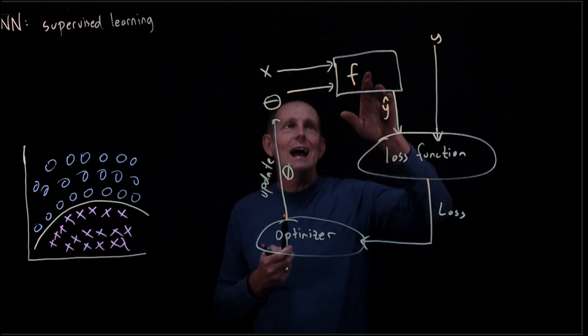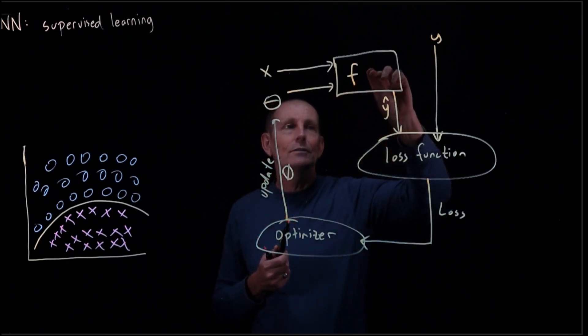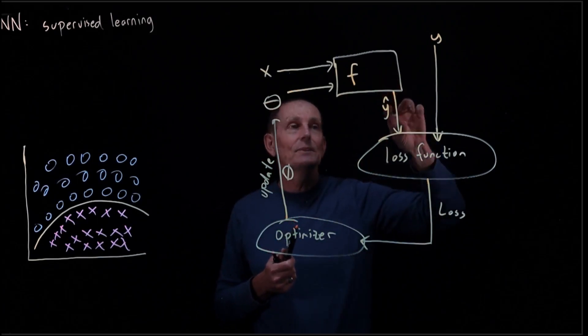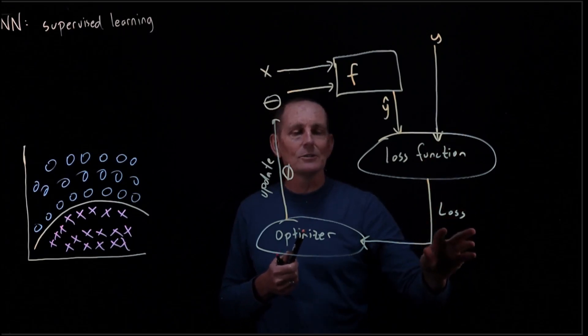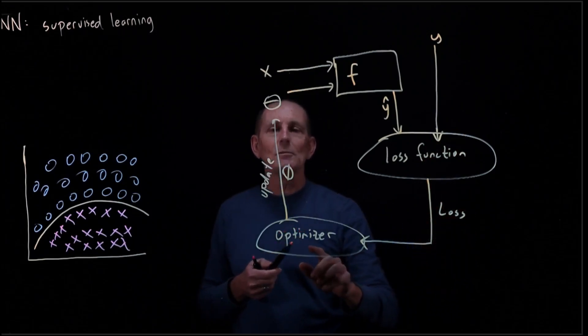So we'll say basically, how well does F do to begin with in the first try? Probably really poorly. So we look at Y-hat and Y, they're probably far apart. We look at the loss function, we take the loss which is large, we feed in the optimizer.